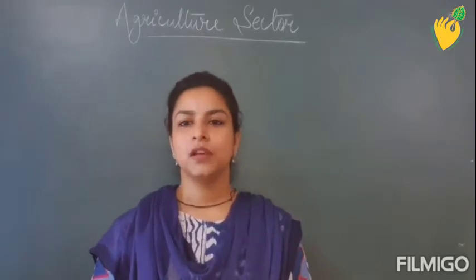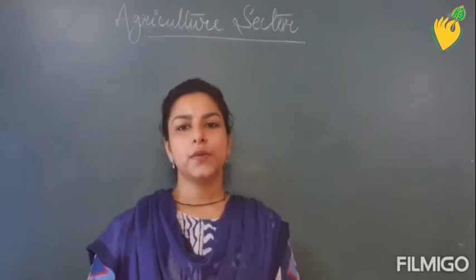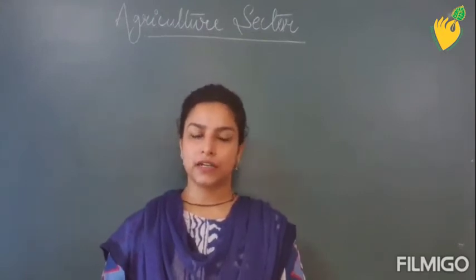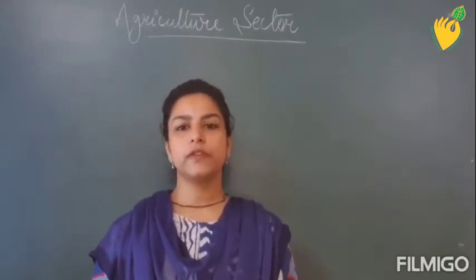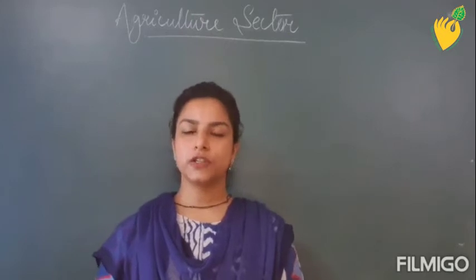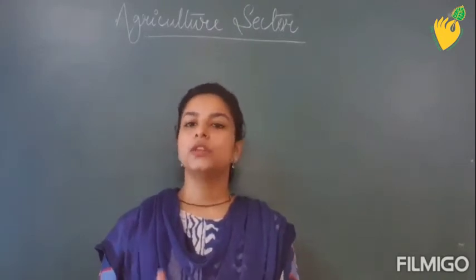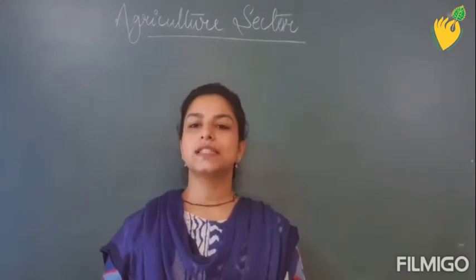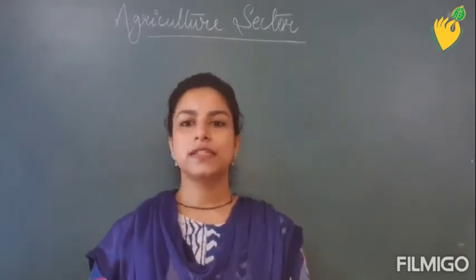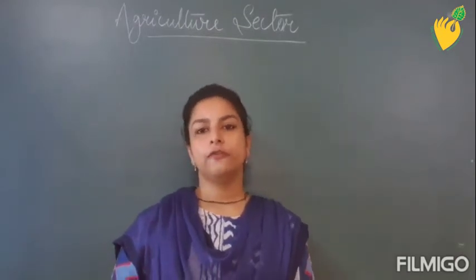Hello students, today we will start with a new topic — the agricultural sector during British rule. During British or colonial rule, India was an agrarian country, meaning most of its population was engaged in agricultural or allied activities. However, at that point in time, even though most of the population was engaged in agricultural work, the country was not self-sufficient in food grains.